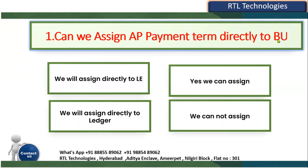So the question is: once the payment term is created, can we assign this payment term directly to the business unit? The entire Account Payables module works at the BU level — whatever setups we do, we do at the business unit level. Can we assign the AP payment term directly to the business unit? Option: Yes, we assign directly to legal entity, not to the business unit. Option: Yes, we can assign directly to the ledger. The answer is: we cannot assign the payment term directly to the business unit.